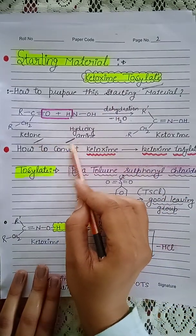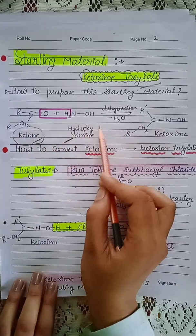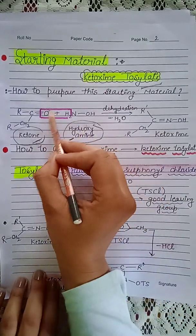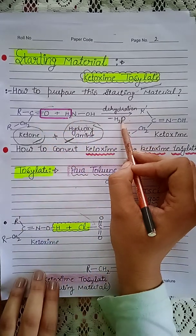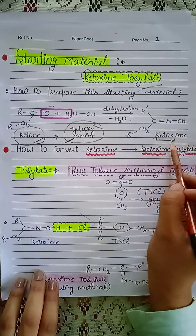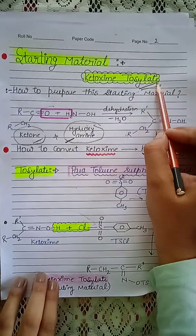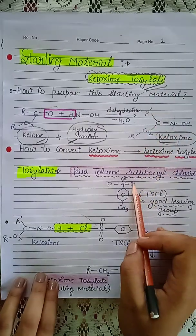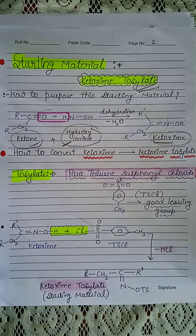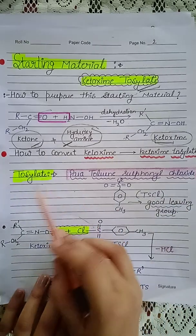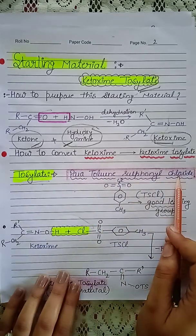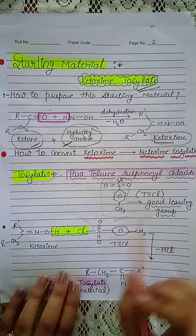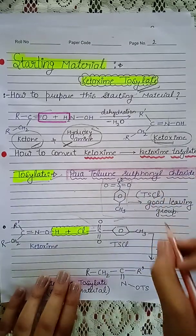Now, how to prepare ketoxime tosylate for this reaction? We need two reagents: first is a ketone, and second is hydroxylamine. When ketone and hydroxylamine react together, dehydration occurs and we get ketoxime. Now we need to convert this ketoxime into ketoxime tosylate. First, we learn about what is tosylate — para-toluenesulfonyl chloride is called tosylate.